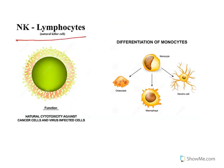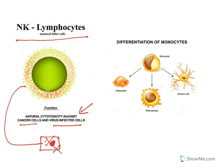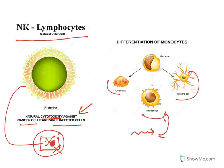Natural killer (NK) cells are cytotoxic against cancer cells and virus-infected cells. When a cell has developed a virus or cancer and cannot be repaired, NK cells come and destroy it. Monocytes circulate in blood, enter tissues, and convert into macrophages, dendritic cells, and osteoclasts — forming a bridge between innate and adaptive immunity.